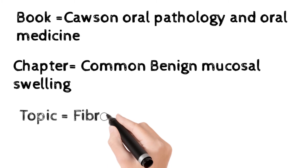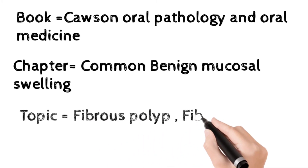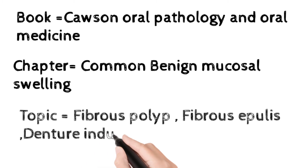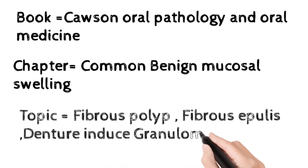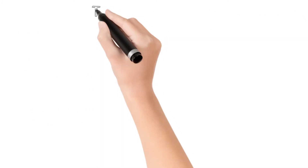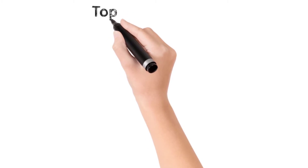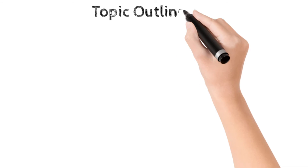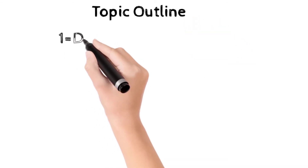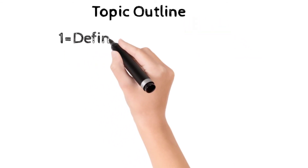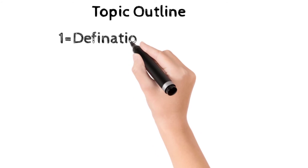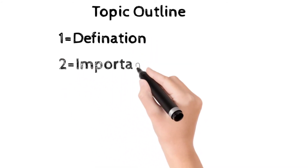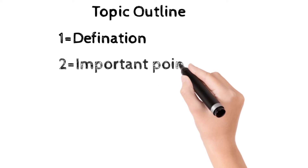Today our topic is the fibrous polyp, fibroepulis, and denture-induced granuloma. These are names for the same topic. Collectively we call them fibrous nodule. Due to different positions, the name is different, but histologically all three — denture-induced granuloma, fibrous polyp, and fibroepulis — are the same and collectively known as fibrous nodule.